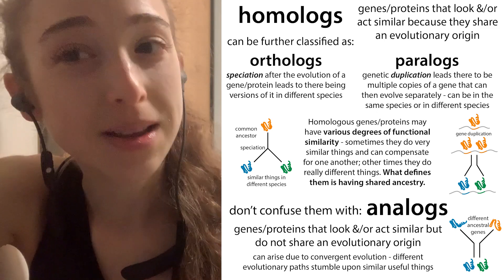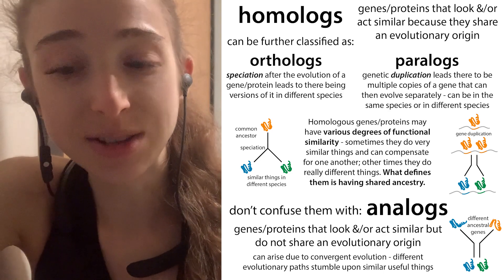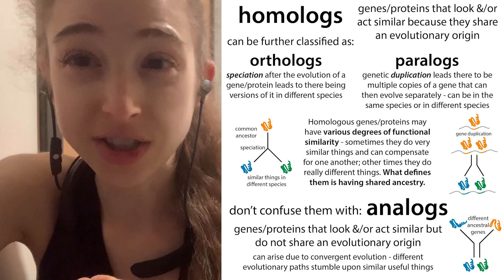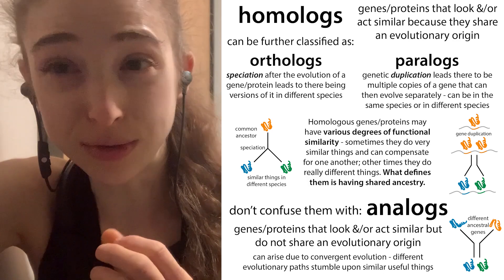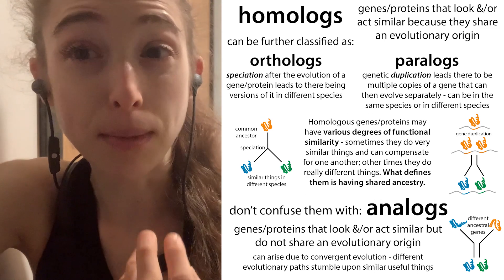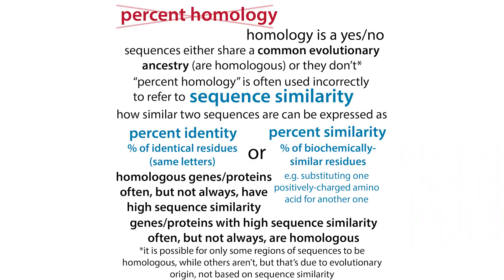These are not homologous but they are analogous, and so these are some of the basic terminology. But there are complications where the terminology is used incorrectly. You might see people talk about sequence homology, or percent homology — this is a misnomer. Homology is a yes or a no: sequences either share a common evolutionary ancestry and are homologous, or they aren't. When people use the term percent homology, what they often really mean is sequence similarity.